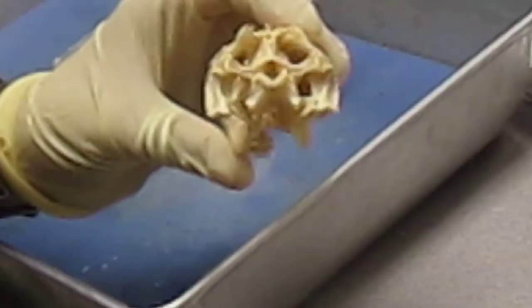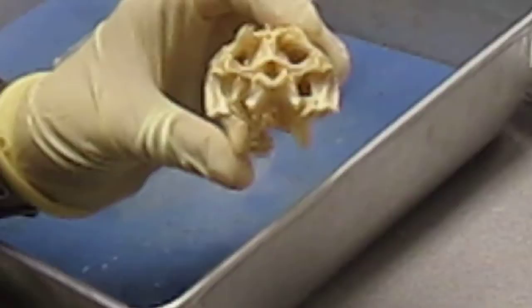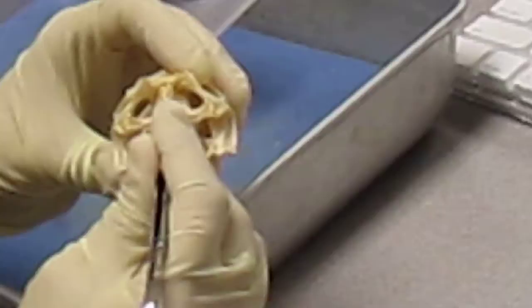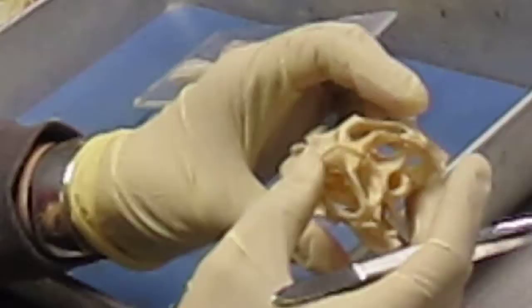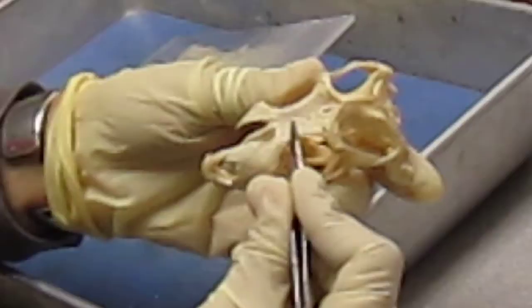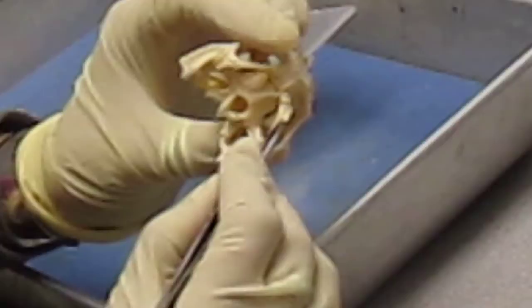And then our supraoccipital, which is SOC, which is this part right here. And then we have our occipital, which is this part right here. Then we have our frontal, which is this whole piece right here. PAR is parietal, and parietal is this whole piece right here.